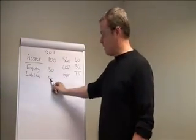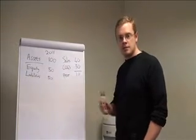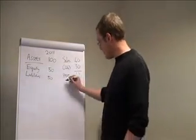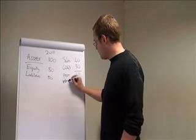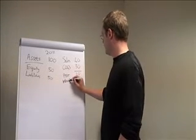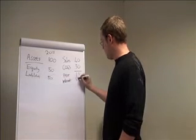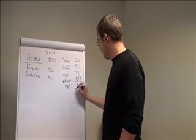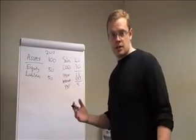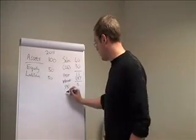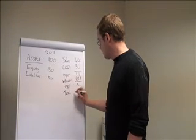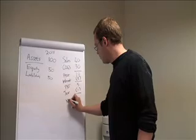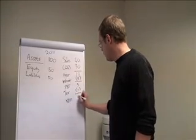We took out a loan of 50 Rand and need to pay interest on that. At 10%, our interest charge is 5 Rand, giving us a profit before tax of 5 Rand. With taxation at 20%, our tax is 20% of 5, which is 1 Rand. That leaves us with a net profit after tax of 4 Rand.